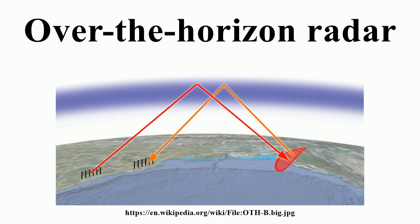A second type of OTH radar uses much lower frequencies, ones that will diffract around the surface of the Earth, and especially over the sea. Like the ionospheric high-frequency systems, the received signal from these ground-wave systems is very low and demands extremely sensitive electronics. Because these signals travel close to the surface and lower frequencies produce lower resolutions, low-frequency systems are generally used for tracking ships rather than aircraft. However, the use of bi-static techniques and computer processing can produce higher resolutions, and has been used as of the 1990s.